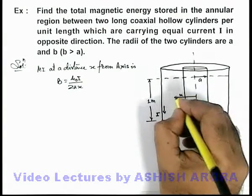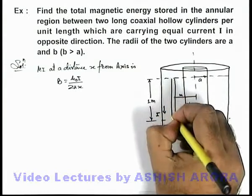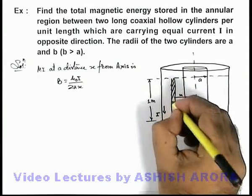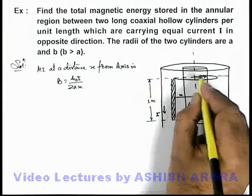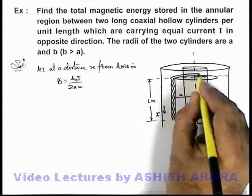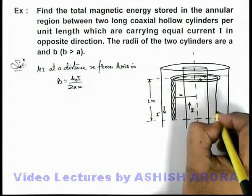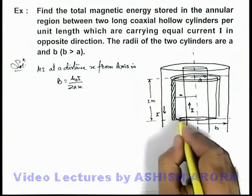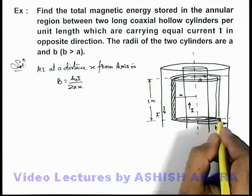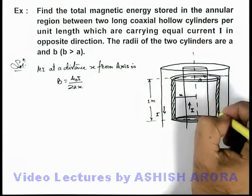For this, at a distance x from cylindrical axis, we consider a hollow cylindrical element or elemental shell which is of width dx and radius x. You just look at it very carefully. This is a cylindrical shell element which is of radius x and it is considered to be of width dx.